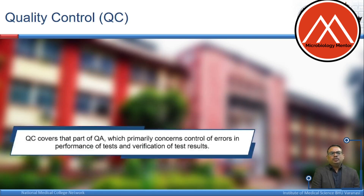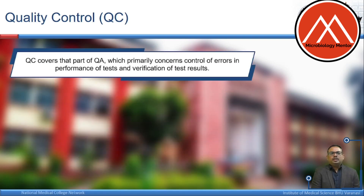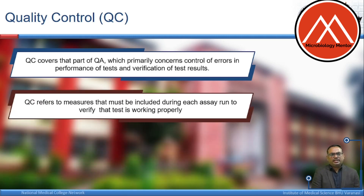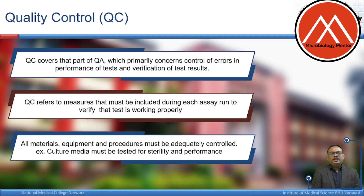Quality control covers that part of quality assurance which is primarily concerned with the control of errors in the performance of a test and verification of the test results. It refers to the measures that must be included during each run or assay to verify that the test is working properly. All materials, equipment, and procedures must be adequately controlled. For example, culture media must be tested for sterility and performance.